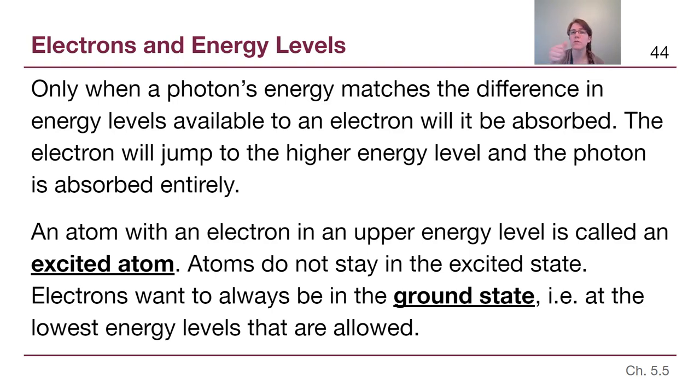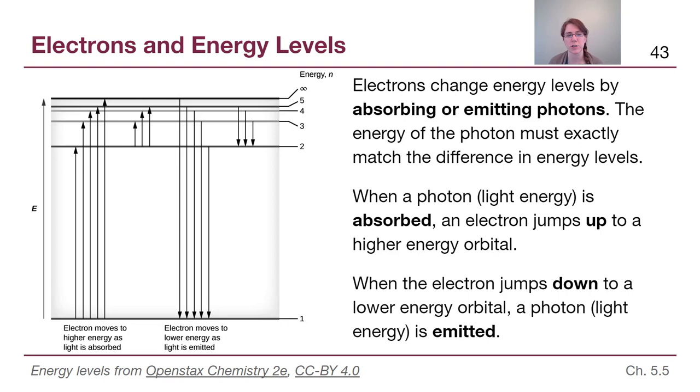And so when we see all of those different spectral lines in a pattern, what we are seeing is basically all of the possible combinations, all of the possible combinations like n equals 1 to n equals 2, or 1 to 3, or 2 to 3, or 2 to 4, and so on. All of the possible jumps, the different lengths of the arrows shown here, are what we are seeing when we either have an absorption spectrum, like all of the left arrows that are pointing upwards, or an emission spectrum, like all of the right arrows that are pointing downwards here.